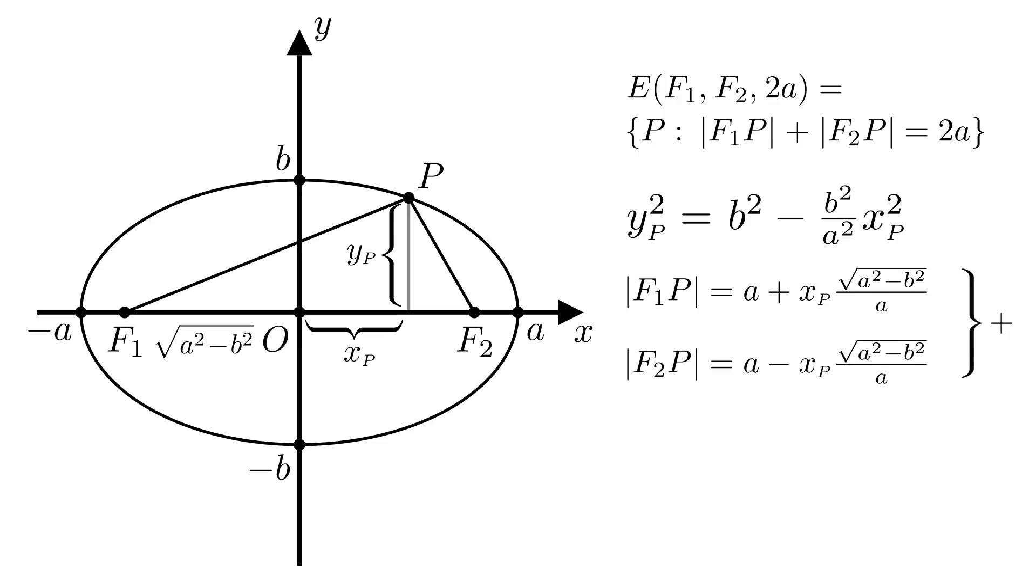Finally, when we add |F1P| and |F2P|, we get that |F1P| plus |F2P| is equal to 2a. Now by the definition of an ellipse, point P is on the ellipse defined with focal points F1 and F2 and the semi-major axis a. And since P was an arbitrary point on the shrunken circle, that means that our shrunken circle is also an ellipse.